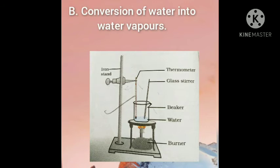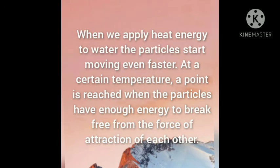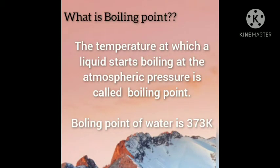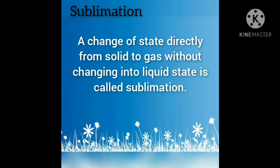B. Conversion of water into water vapor: Take water in a beaker and start heating. When we supply heat energy to water, particles start moving even faster. At a certain temperature, a point is reached when the particles have enough energy to break free from the forces of attraction of each other. The temperature at which a liquid starts boiling at atmospheric pressure is known as the boiling point. Boiling is a bulk phenomenon — particles from the bulk of the liquid gain enough energy to change into the vapor state. The boiling point of water is 373 Kelvin. A change of state directly from solid to gas without changing into liquid state is called sublimation — for example, sublimation of ammonium chloride.